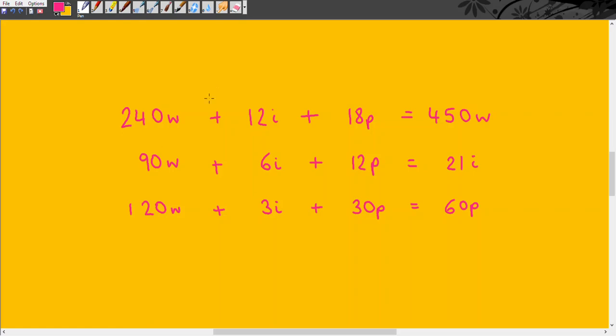Just a reminder this is an input-output table. Over here we have the outputs which are the totals of wheat. The wheat industry is producing 450 wheat total. The iron industry is producing 21 irons and the pig industry is producing 60 pigs, and you can see that they're the same as these totals here.